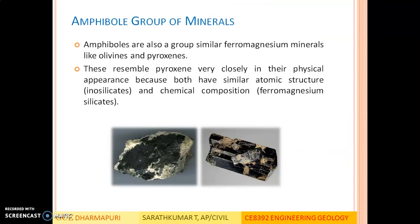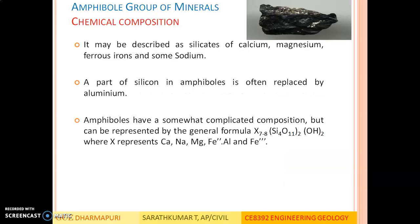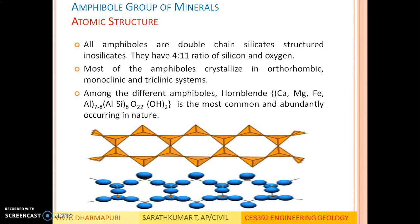We have seen the general chemical composition of the amphibole group of minerals. Its composition is a little complex but the base material is silica, and the radical can have calcium, sodium, magnesium, a combination of iron, aluminum, and iron. The most common amphibole group mineral is hornblende — it is calcium, magnesium, iron, aluminum with aluminum, silica, and oxygen.